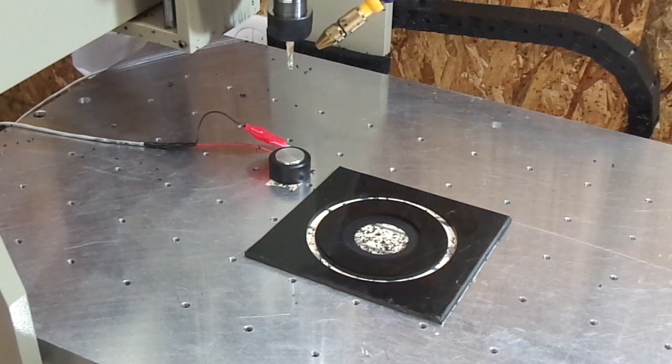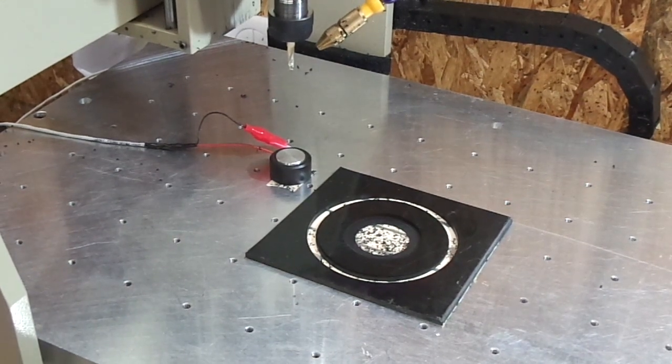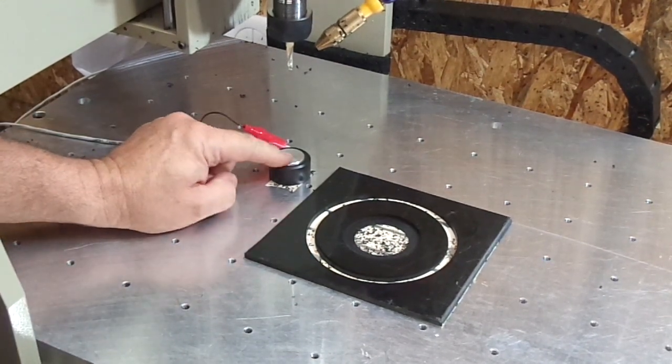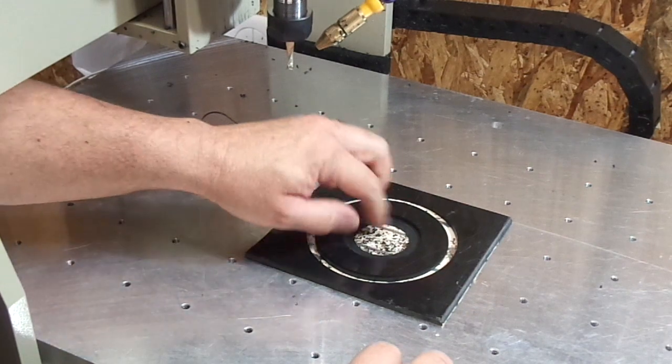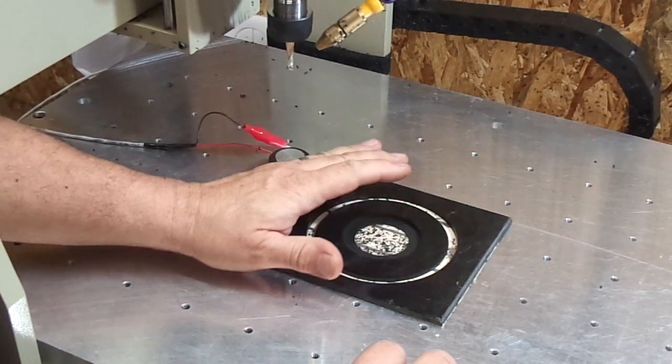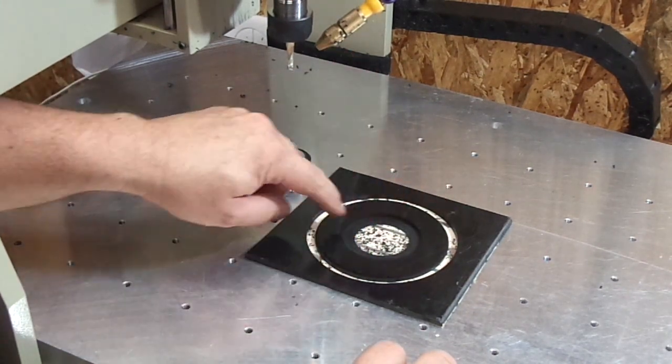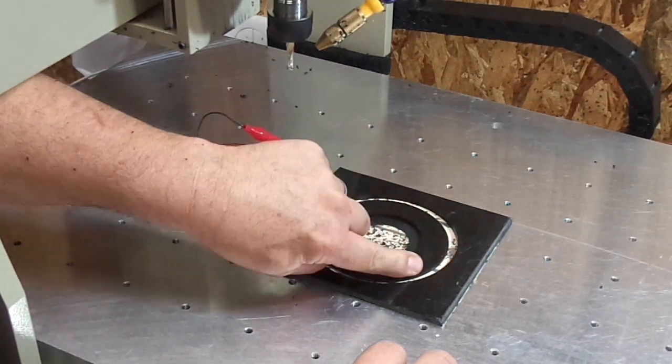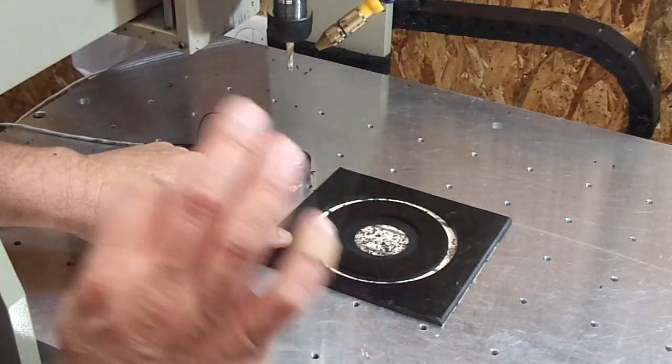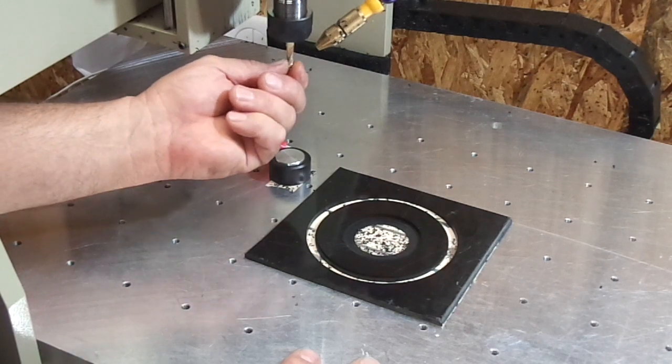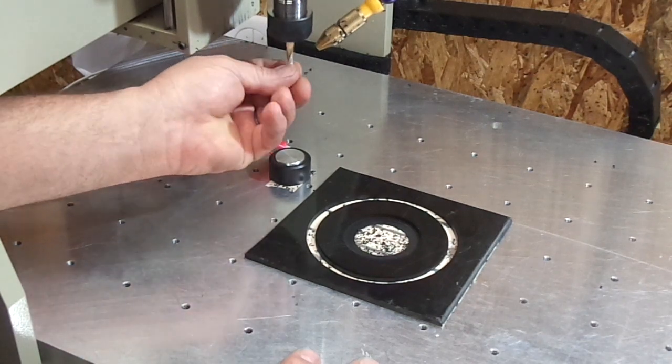I just wanted to show you with the tool setter how we got the little onion skin. We cut all the way through and it did not even cut the double stick tape. That's really good. The double stick tape will gum up the bit, but there's just a little bit on here.